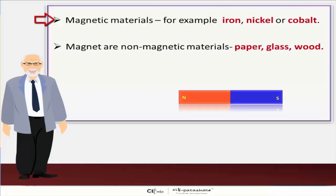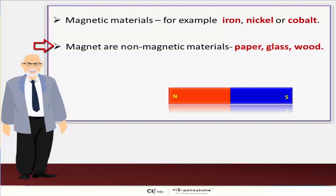Magnetic materials examples are iron, nickel, and cobalt. Non-magnetic materials examples are paper, glass, and wood.